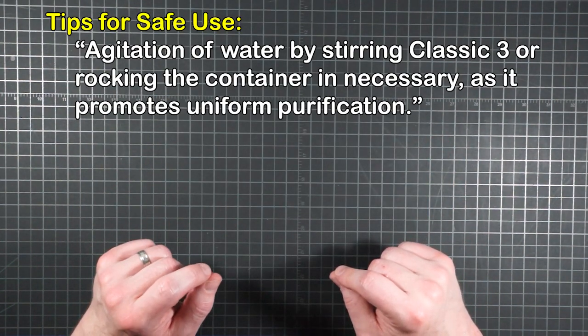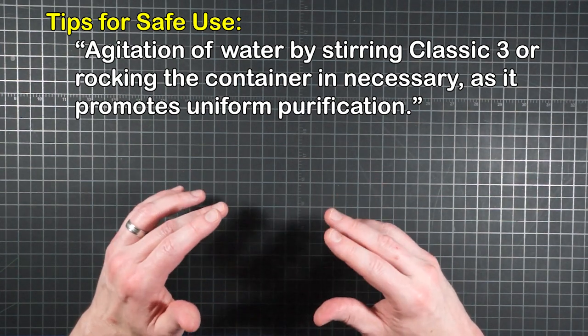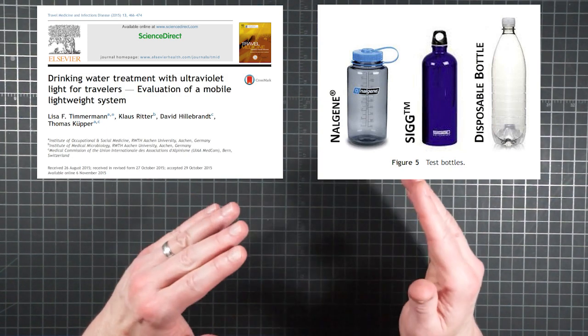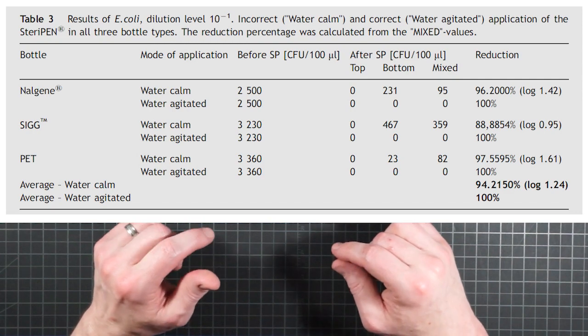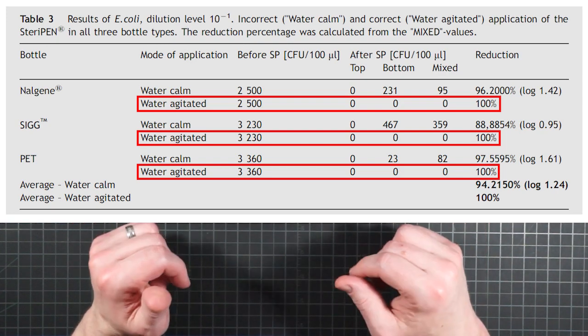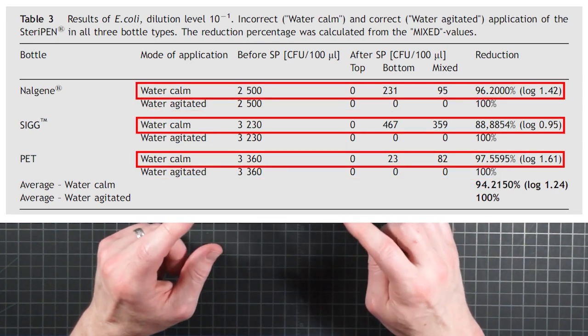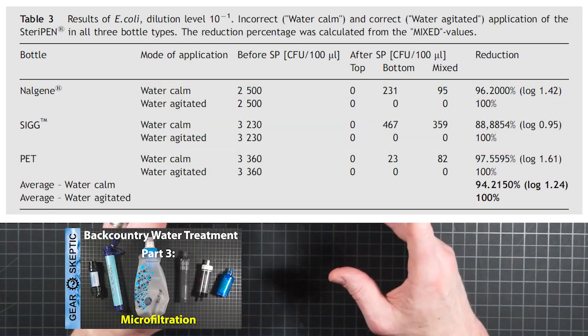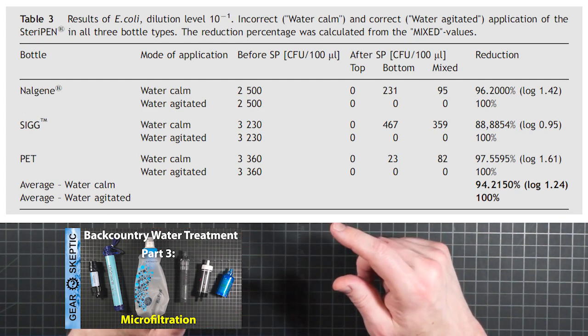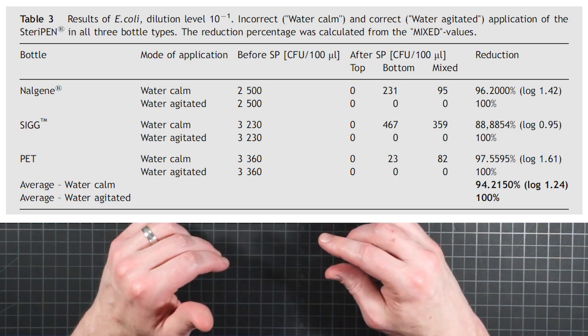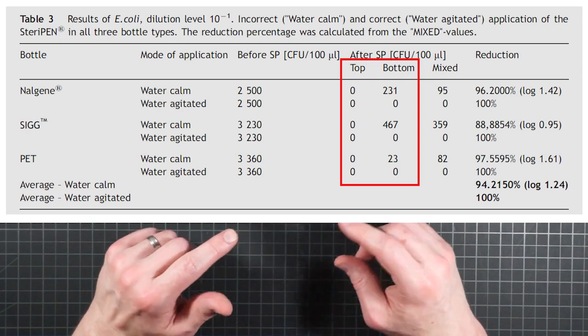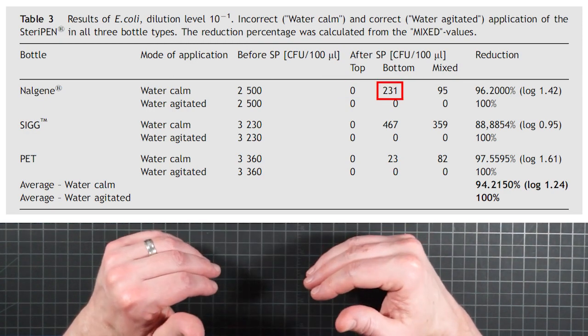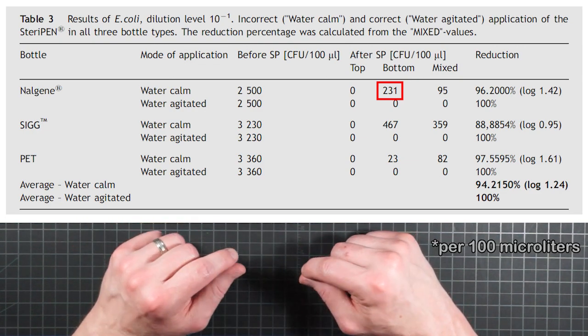In the Tips for Safe Use section, it states, agitation of water by stirring Classic 3 or rocking the container is necessary as it promotes uniform purification. The study authors investigated the importance of this by testing all three of their bottle types with both calm and properly agitated water. Table 3 shows what they found. Using a lower concentration of E. coli, correct application resulted in no remaining viable pathogens. But in all three cases, failure to agitate the water during exposure resulted in less than two logs of reduction, less than even one log with the aluminum bottle. Regarding the effective distance from the bulb on disinfection capability, the authors took water samples after each treatment from both the top of the bottle and the bottom.